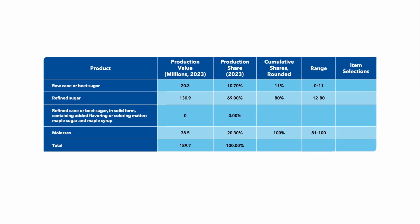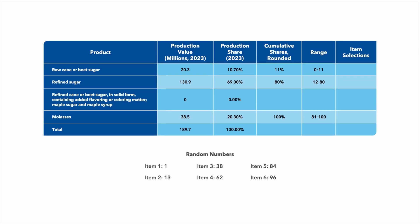Next, we select 6 items for this establishment. To do this, we'll need 6 random numbers between 0 and 100. Here are the random numbers in this example.